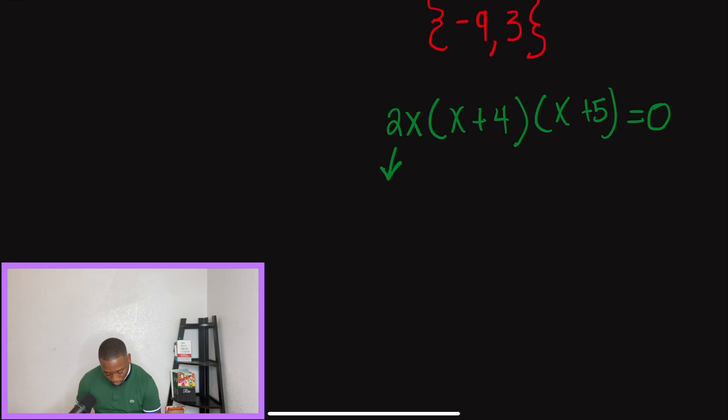So each of these factors are all going to be set equal to zero. But typically, what happens is students will understand and they will go in and set x plus four equal to zero and x plus five equal to zero. But a lot of times, they don't know what to do with that other term because it looks different. It's not inside parentheses, it's not in the same format. However, the same rules apply, guys. So we're going to do 2x is equal to zero.